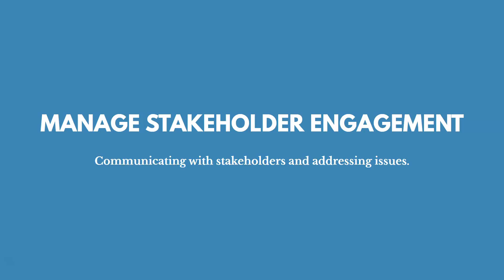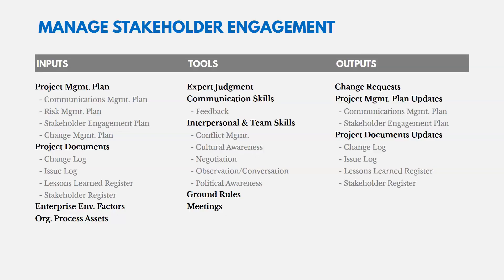Managing stakeholder engagement means communicating with stakeholders and addressing issues as they arise. Key inputs include the project management plan — most importantly the stakeholder engagement plan — along with project documents like the change log, issues log, and lessons learned register. For example, in the Dakota Access Pipeline project, when working with Native American Indian tribes to resolve protests and issues, you could pull up the issue log and discuss the specific concerns those tribes have.